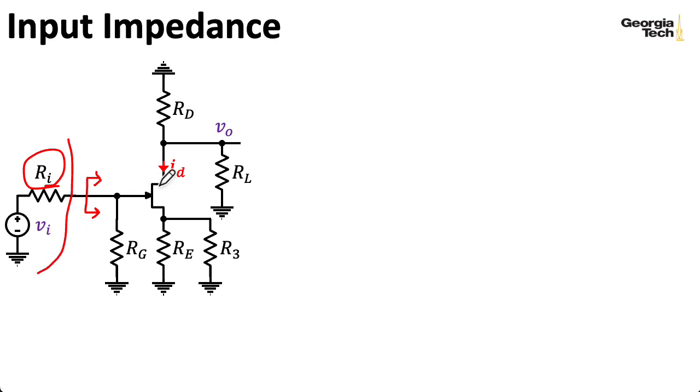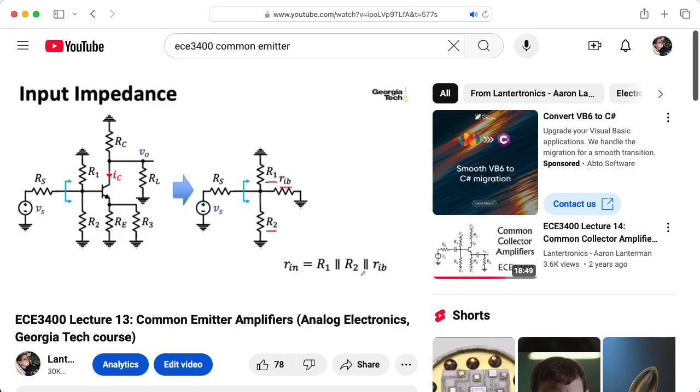And the input impedance for a FET-based amplifier is even simpler. So here I'm going to define the input impedance as looking in this direction, because RI is considered part of our source for the amplifier and not part of the amplifier itself. Remember, looking into the gate, that looks like an open circuit. So our input impedance is just RG. And if you had another resistor up here as part of a fixed bias scheme, it would be those two resistors in parallel. For the common emitter amplifier, the input impedance was a lot more complicated, because we had to worry about that current flowing through the base.